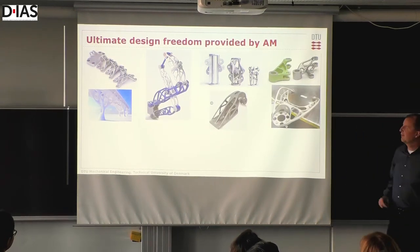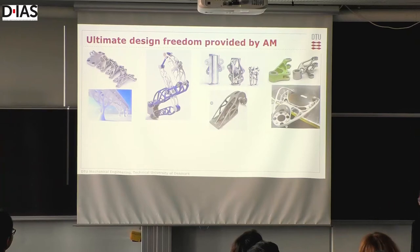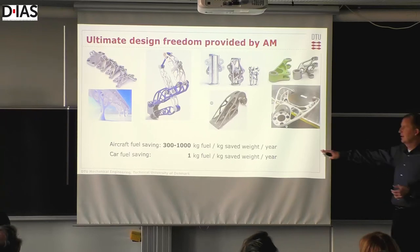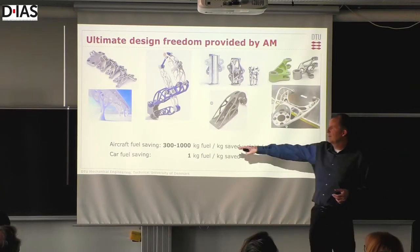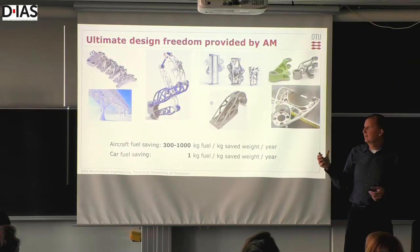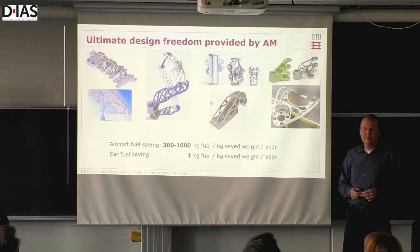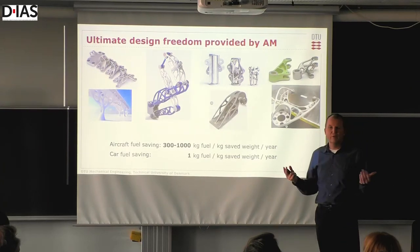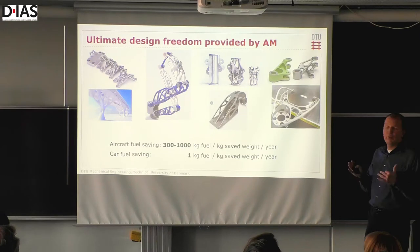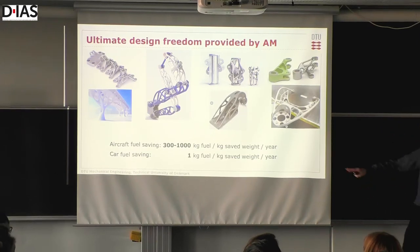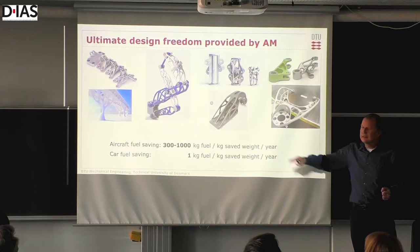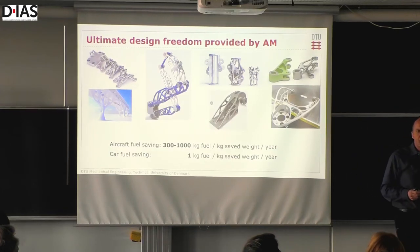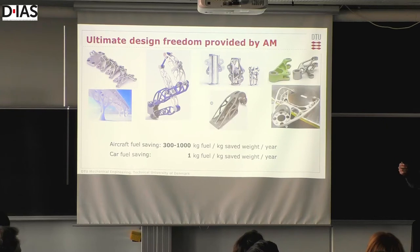Why do we want to find optimal structures or cut away material? Just these numbers say it all. If you build an airplane and you can save one kilo of weight, that corresponds to a fuel saving of 300 up to 1,000 kilos of fuel per year per kilo saved. In cars it's less, but nevertheless these are impressive numbers. Nowadays, people in the airplane industry try to cut away material everywhere.